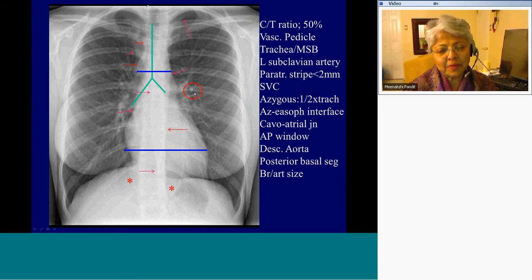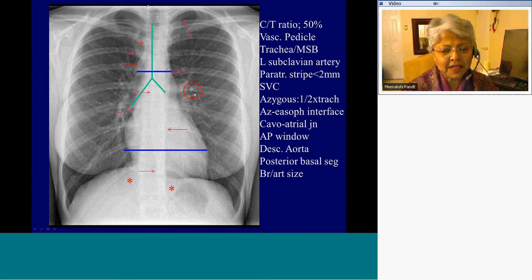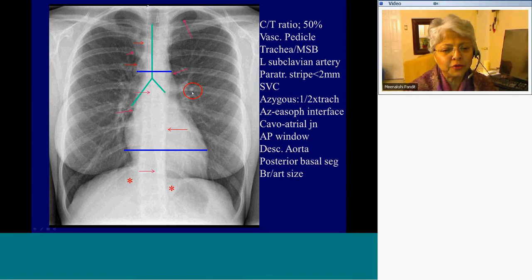One of the important things to remember is the coronal diameter of an end-on blood vessel should be roughly that of the end-on bronchus — it should be equal. The vessels become larger in situations of fluid overload, so that would be a good landmark to keep in mind.